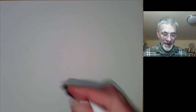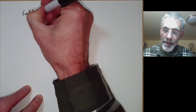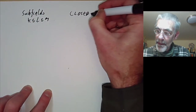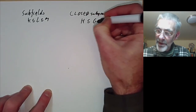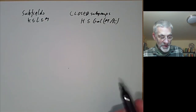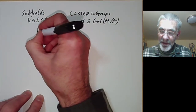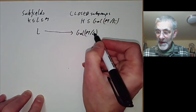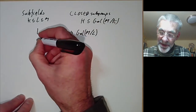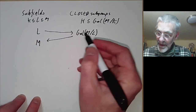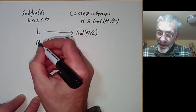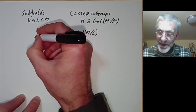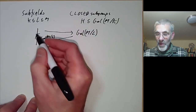What we want to show is that sub-extensions K ⊆ L ⊆ M and closed subgroups H of the Galois group of M over K correspond to each other. The correspondence is: a sub-extension L corresponds to the Galois group of automorphisms of M fixing every element of L, and going back to fields this gives the subfield of M fixed by that group, i.e., Gal(M/L). L is obviously a subfield of this fixed field and the problem is to show they are equal.